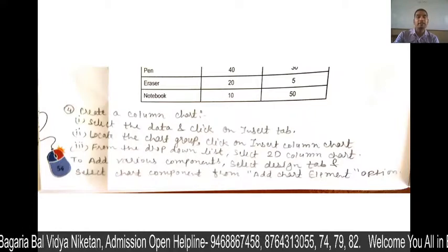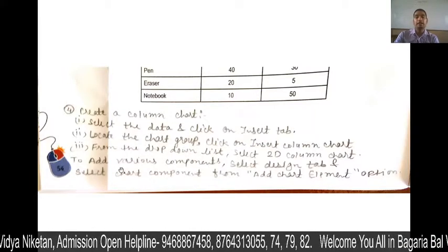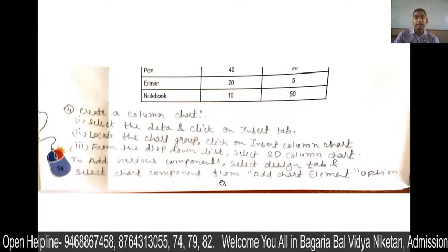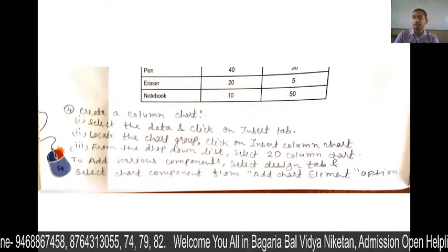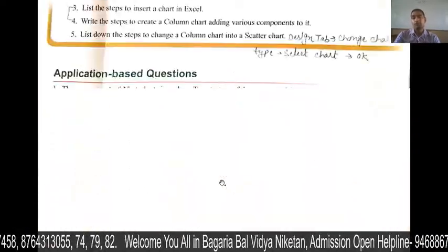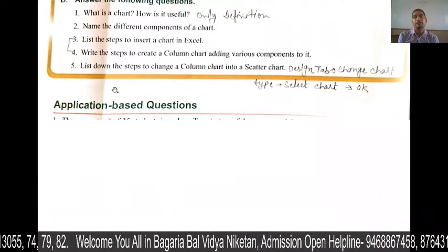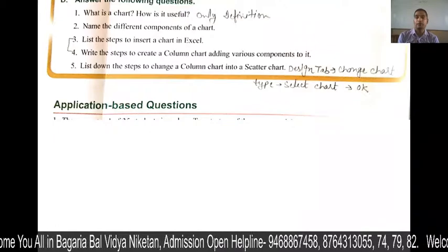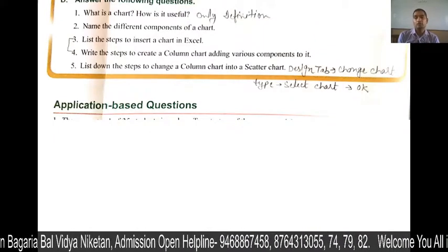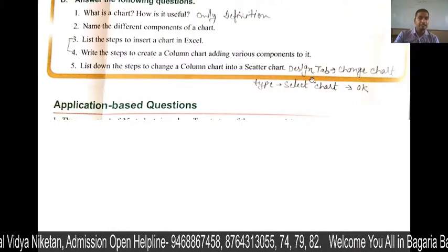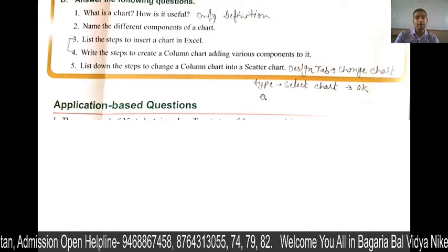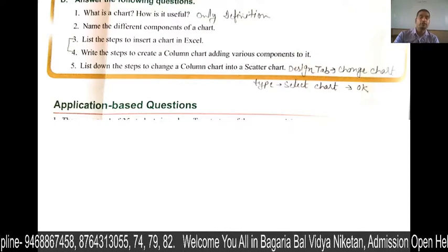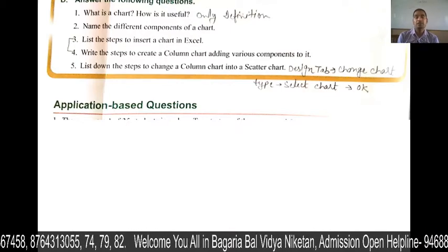To add various components, go to the Design tab and select the Add Chart Element option — click on it and you will see the chart components you can add. Next: to change a column chart into a scatter chart, click on the Design tab, select Change Chart Type, then select the scatter chart and click OK. The column chart will change to a scatter chart. Thank you.